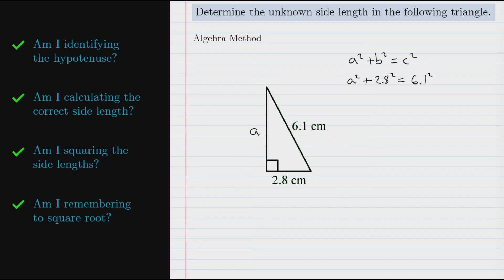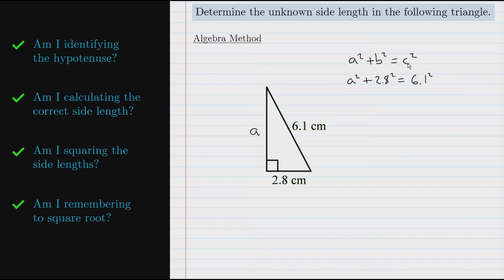The third question says: am I squaring the side lengths? This is usually not a big concern with the algebra method because the squaring is visible right there in the equation, but make sure you remember to square. So we can write a² + 2.8², which is 7.84, equals 6.1², which is 37.21.